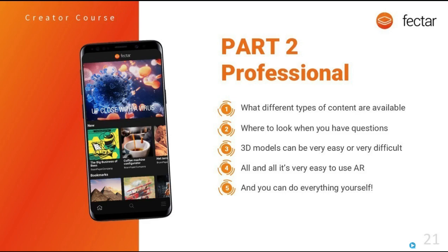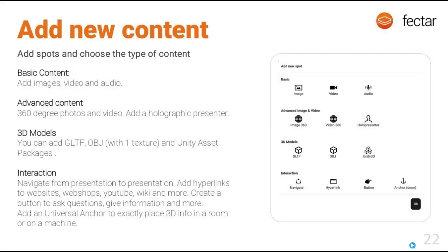Let's zoom in on a few content types we call our killer content. The different types available include 3D models, images, and the HoloPresenter. Let's focus on the HoloPresenter — it's really killer content that's very easy to produce because you make a holographic presenter using just your smartphone.